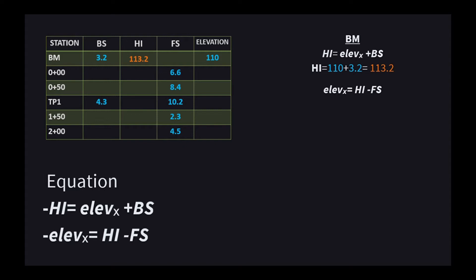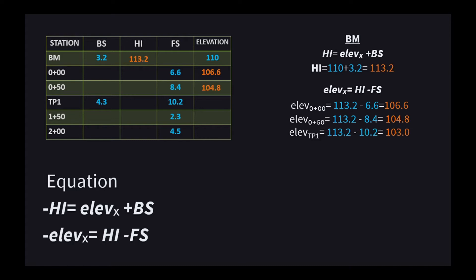Now that we have the HI, we can solve for the following elevations. At station 0+00, HI is 113.2 minus the foresight of 6.6, equals 106.6. At station 0+50, HI is still 113.2 minus foresight of 8.4, giving 104.8. Lastly, at turning point TP1, HI is 113.2 subtracted by the foresight of 10.2, giving 103.0.